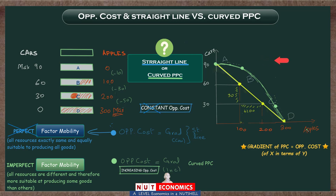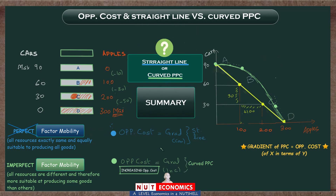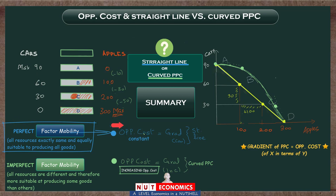Let me sum it all up. Perfect factor mobility means you are assuming all resources are uniform and equally suitable to producing either apples or cars. With that unrealistic assumption, as you make more apples, you always give up the same number of cars — a constant opportunity cost. Since opportunity cost equals the gradient of the PPC, a constant opportunity cost means a constant gradient all along the PPC, meaning your PPC will be a straight line.